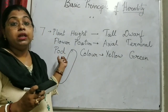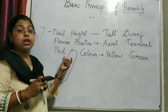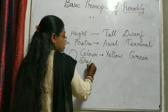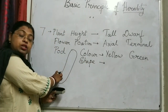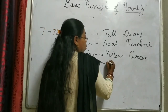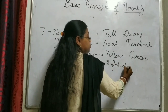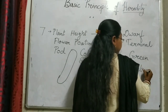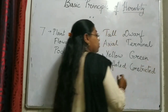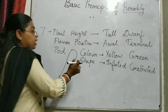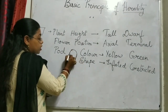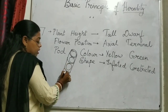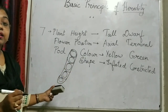Next is the pod shape — how does this pod look? When we talk about pod shape, it is again of 2 characters: one is inflated and the second is constricted. Inflated means it will look smooth and full, while constricted means it will have some constriction at each seed. If you open this, you will find that there are some seeds inside — those are the pea seeds.